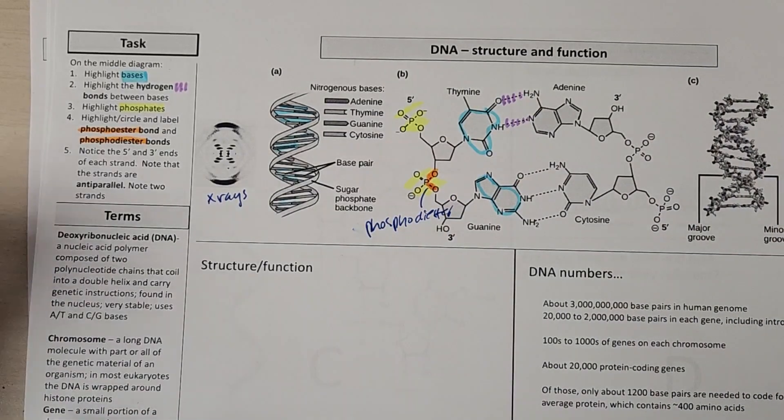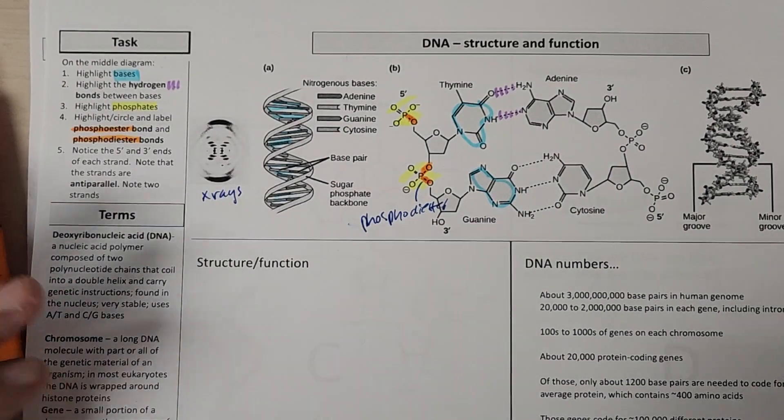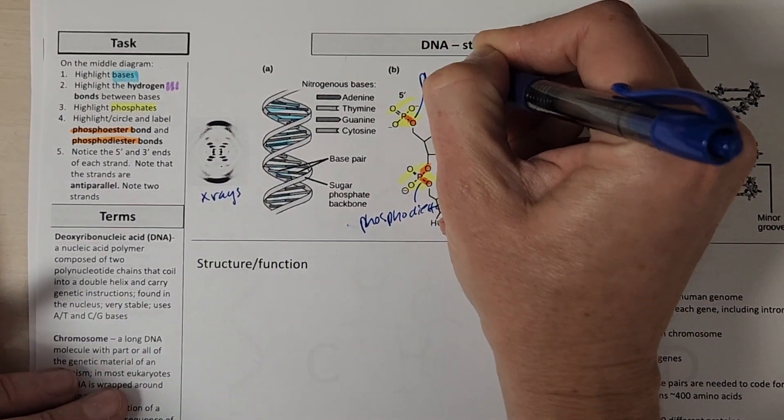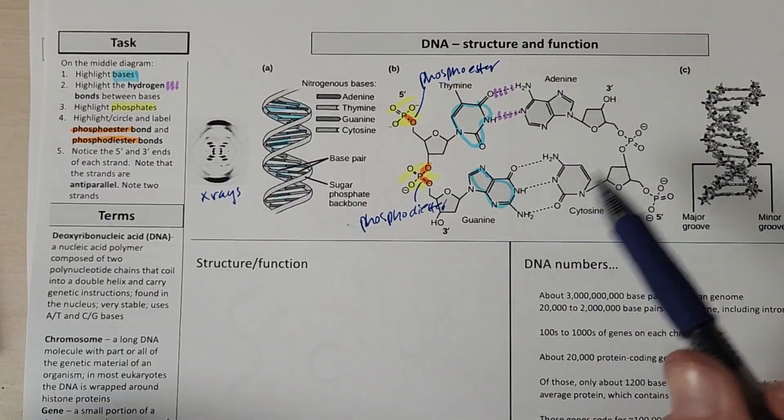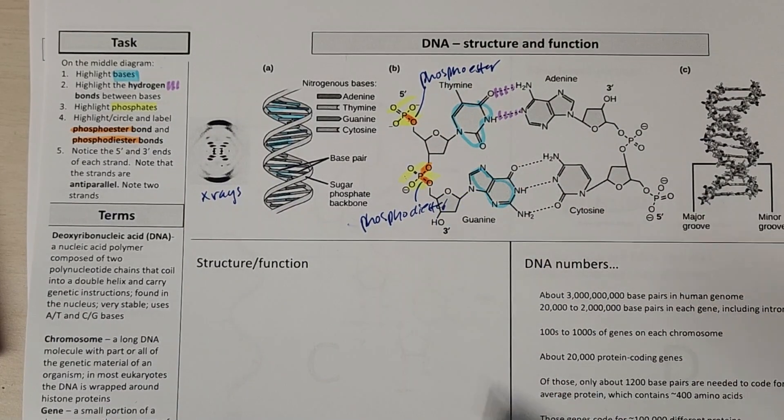The two oranges there. And then up top here, we've got a phosphate that's just connected to one sugar. And so here we have a phosphoester. So those phosphates and sugars, again, alternate. And these phosphoester bonds are what hold these polymers together.